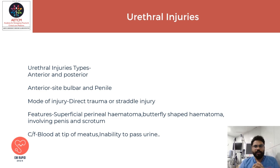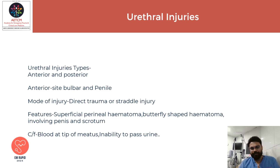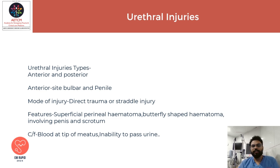Urethral injuries are classified into two types: anterior and posterior. The most common sites of anterior urethral injury are the bulbar and penile urethra. The mode of injury is either direct trauma or straddle injury. The cardinal feature is the superficial perineal hematoma or butterfly-shaped hematoma involving the penis and scrotum. Clinical features include blood at the tip of the meatus and inability to pass urine.